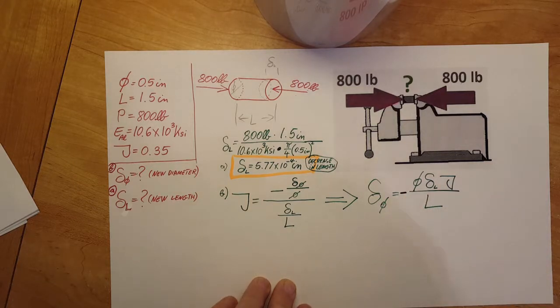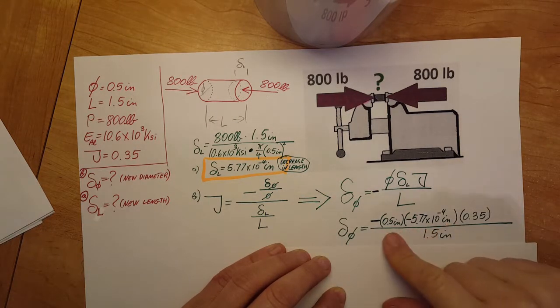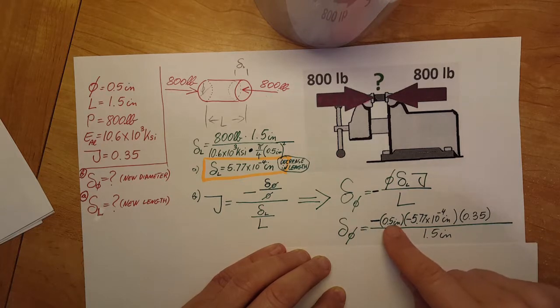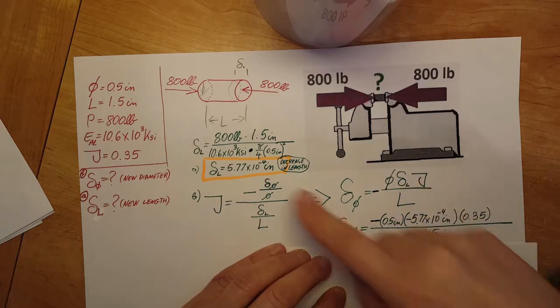All the values plugged in. Now the negative from here stays, original diameter 0.5 inches, the change in length we found it right here. And since it's a decrease we need to make sure that we put it in with a negative.